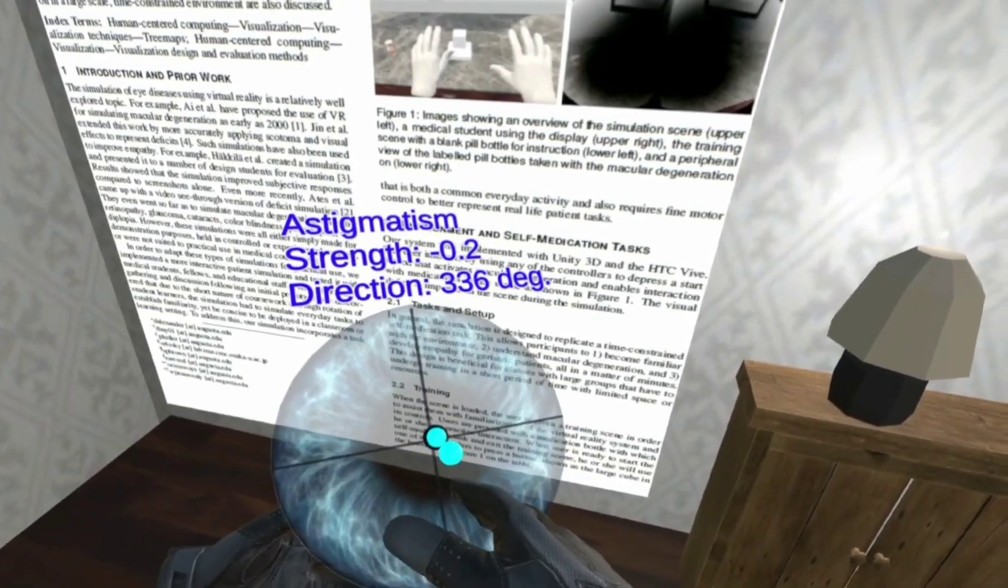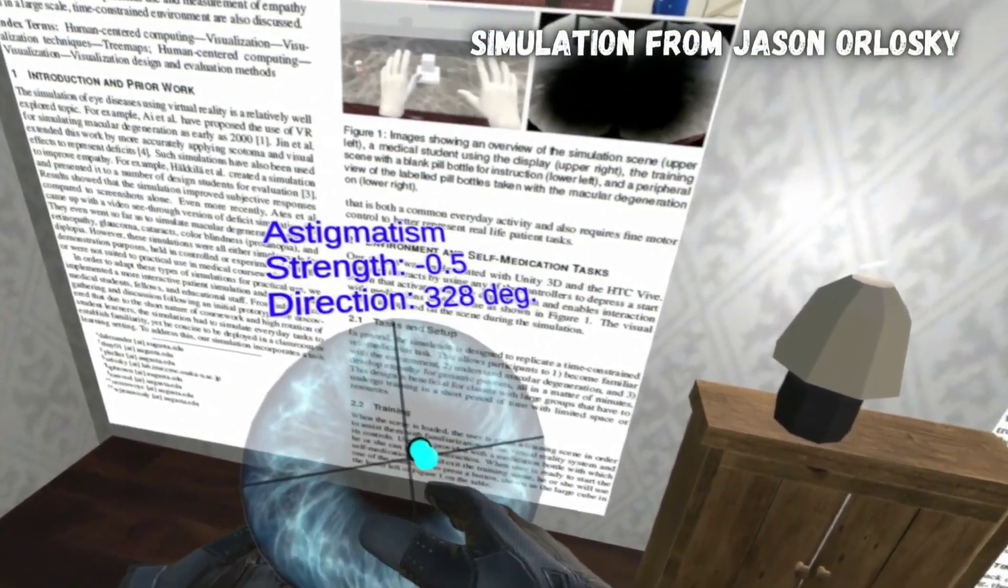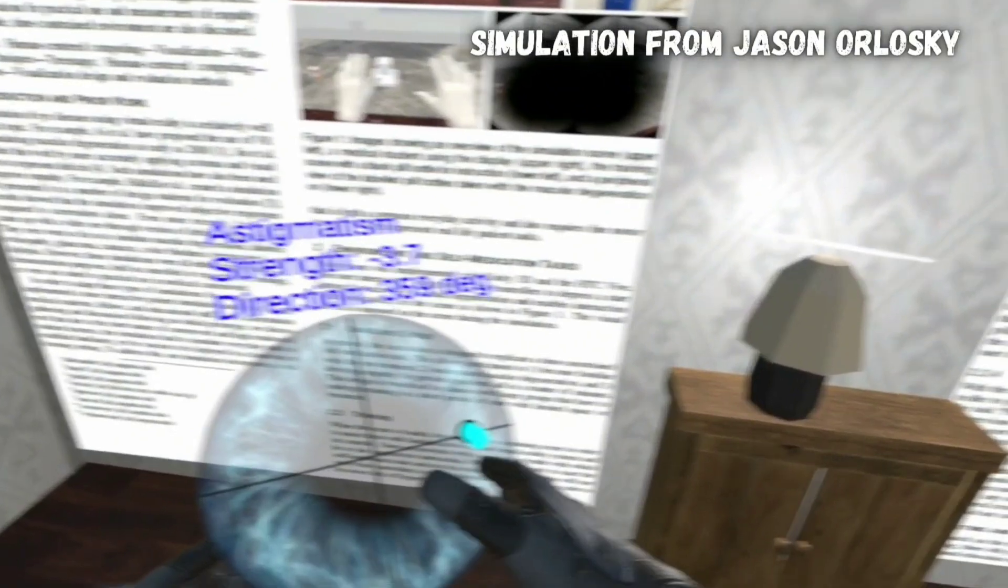But now let's see how astigmatism would actually impact what you see. This video simulates this. You can see everything changing as the amount and direction of astigmatism are changed. I'll explain what those numbers mean more later.